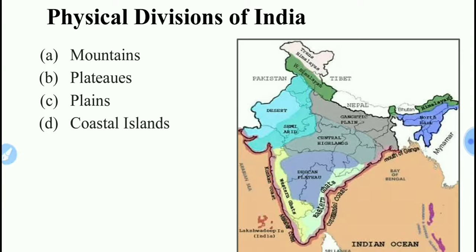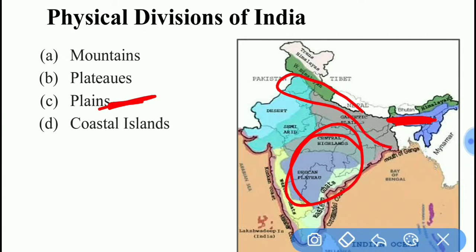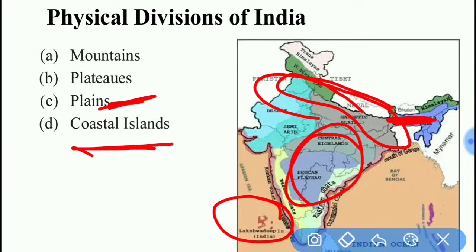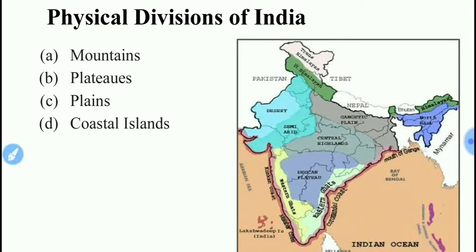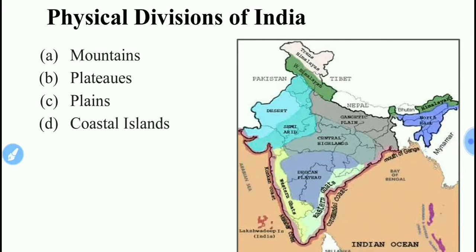The second physical division is plateaus, which are basically found in the southern part of India. In the north-east, Meghalaya also comes under plateaus. Plains are mainly formed by the deposition of rivers. Apart from plains and coastal areas, there are also deserts, which are basically found in the western part of India, especially in Gujarat and Rajasthan.